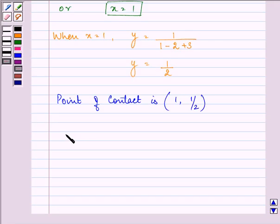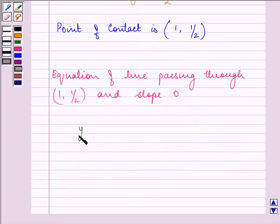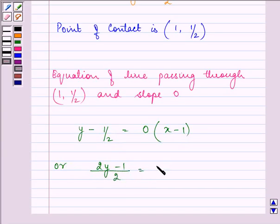Now we need to find out the equation of line passing through this point (1, 1/2) and having a slope as 0. So we have y - y₁ equal to m, that is slope, times (x - x₁). Or we have 2y - 1 upon 2 equal to 0.